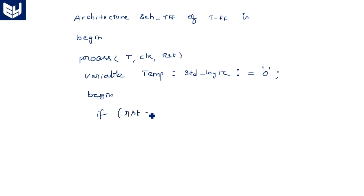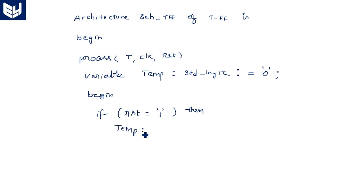If reset equals one — meaning reset is activated — the output should be zero regardless of anything else. We use the temporary variable for the intermediate output, which we will later assign to Q. So: tmp := '0'; Note that colon-equal (:=) is used for variable assignment.